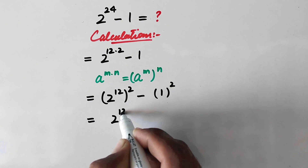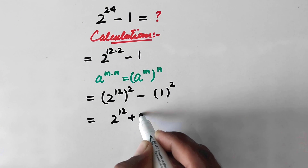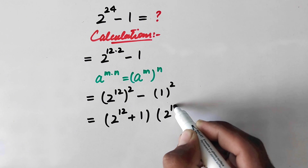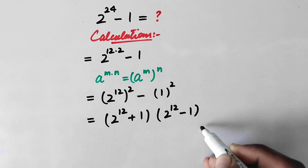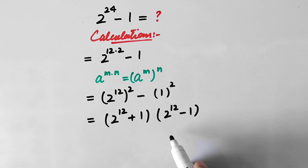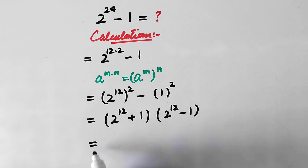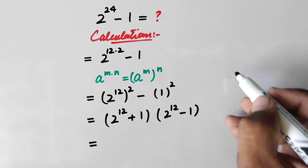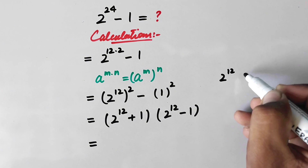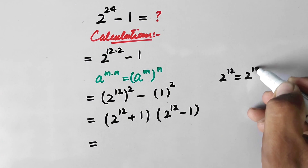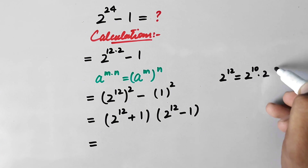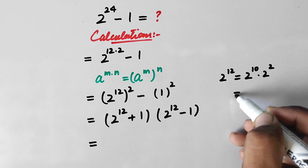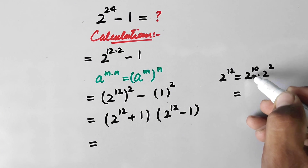That identity gives a plus b times a minus b. So in that way we can write it as 2 to the power 12 plus 1, times 2 to the power 12 minus 1. Now we will compute the value of 2 to the power 12. We can write 2 to the power 12 as 2 to the power 10, times 2 to the power 2.